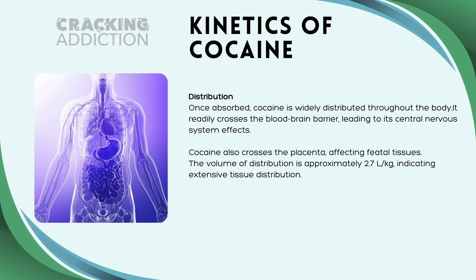Once absorbed, cocaine is widely distributed throughout the body. It readily crosses the blood-brain barrier, which is why it causes its euphorogenicity — its psychoactive effect. Cocaine also crosses the placenta, affecting fetal tissues, which is an issue for cocaine use during pregnancy. The volume of distribution is approximately 2.7 liters per kilogram, indicating extensive tissue distribution.